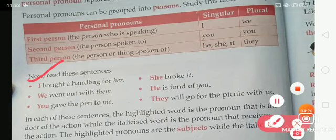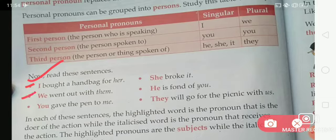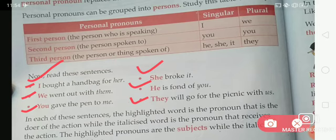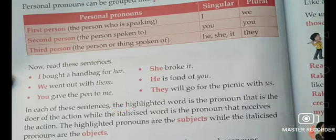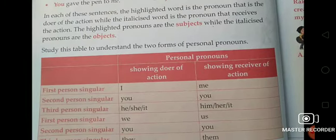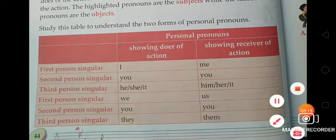Now read these sentences: I bought a handbag for her. We went out with them. You gave the pen to me. He broke it. He is fond of you. They will go for the picnic with us. In each of the sentences, the highlighted word is the pronoun that is the doer of the action, while the italicized word is the pronoun that receives the action. The highlighted pronouns are the subject while the italicized pronouns are the object. Study this table to understand the two forms of personal pronoun — subject and object.